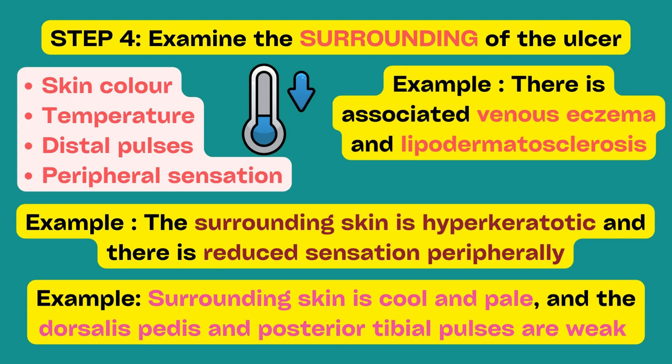Now you need to examine the surrounding of the ulcer. Important things that you must comment on are the skin temperature, color, and pulses. You can also comment about peripheral sensation. Examples of different answers are: surrounding skin is cool and pale and the dorsalis pedis and posterior tibial pulses are weak; or there is associated venous eczema and lipodermatosclerosis; or the surrounding skin is hyperkeratotic and there is reduced sensation peripherally.